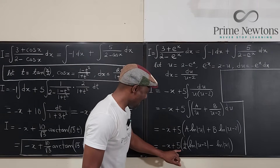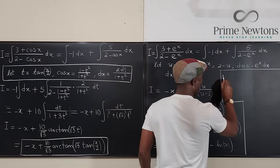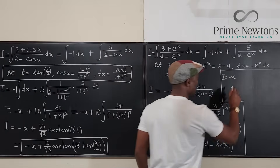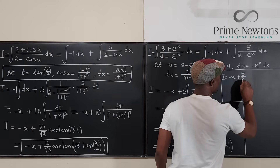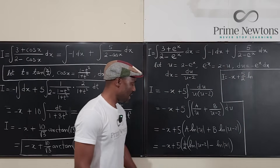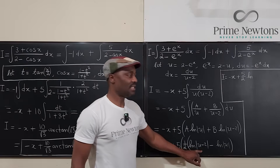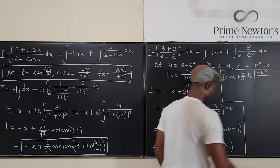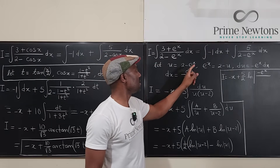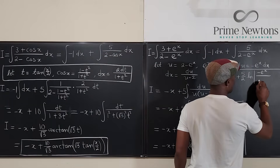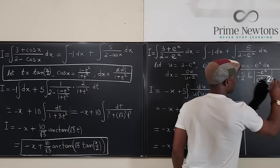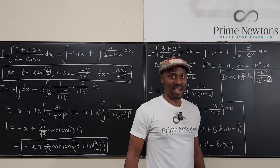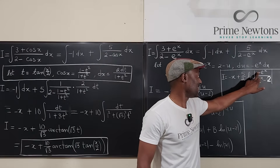Substituting u equals two minus e to the x back in, I equals negative x plus (5/2) ln|u minus 2| minus (5/2) ln|u|, which becomes negative x plus (5/2) times the natural log of |e to the x minus 2| over |2 minus e to the x|. The absolute values mean the sign inside doesn't matter, and that's our final answer.